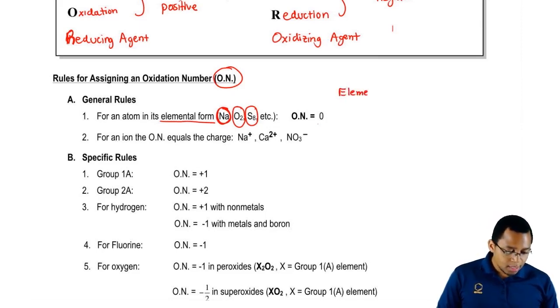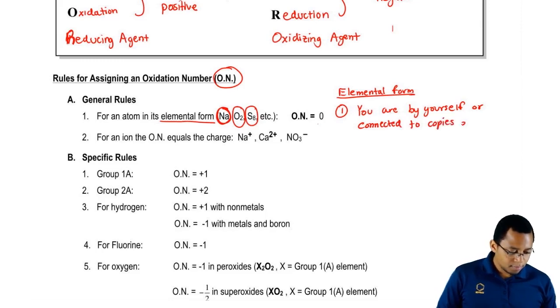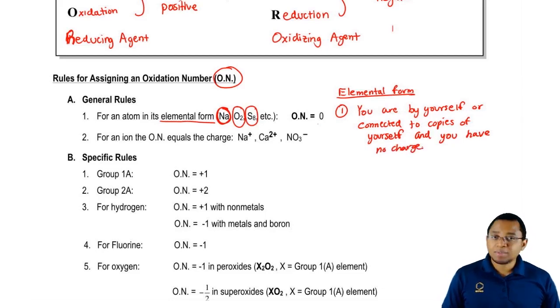Let's write that down. Elemental form means you are by yourself or connected to copies of yourself. If you fit these types of categories, then your oxidation number is equal to zero.